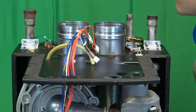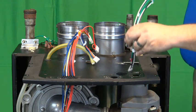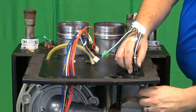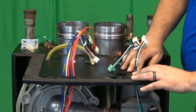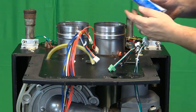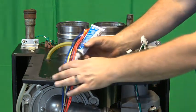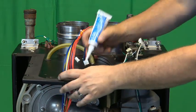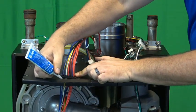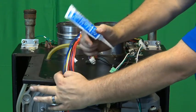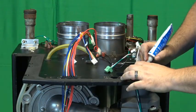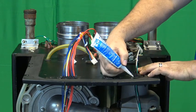We will then use the silicone provided and put a generous bead under the lip. We would put a generous bead right around the outside. This does need to be sealed because it is a sealed combustion boiler.